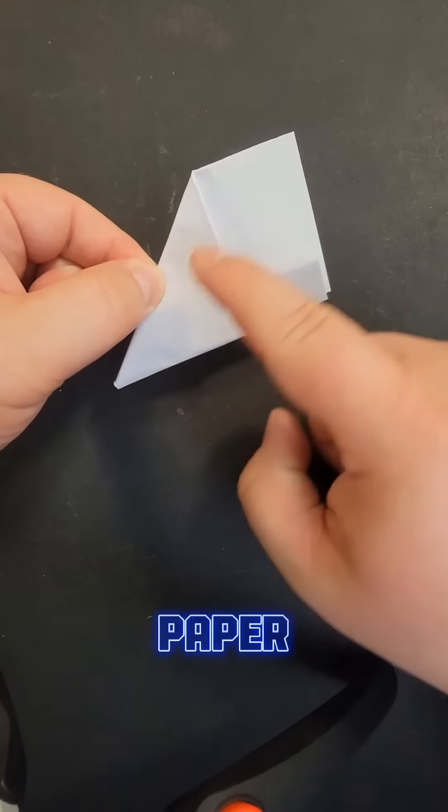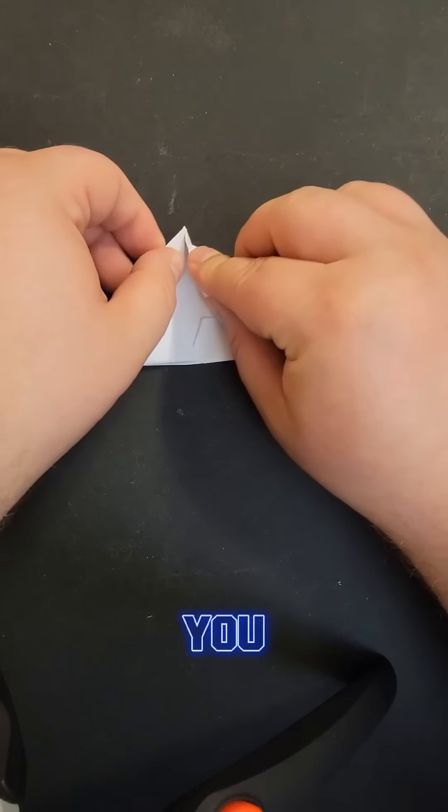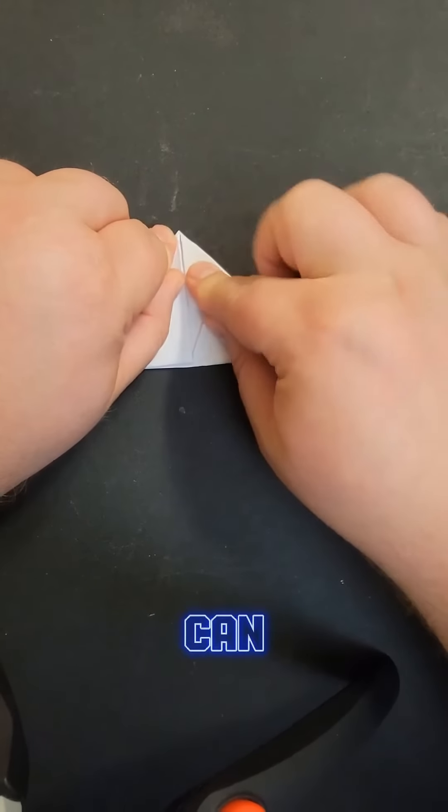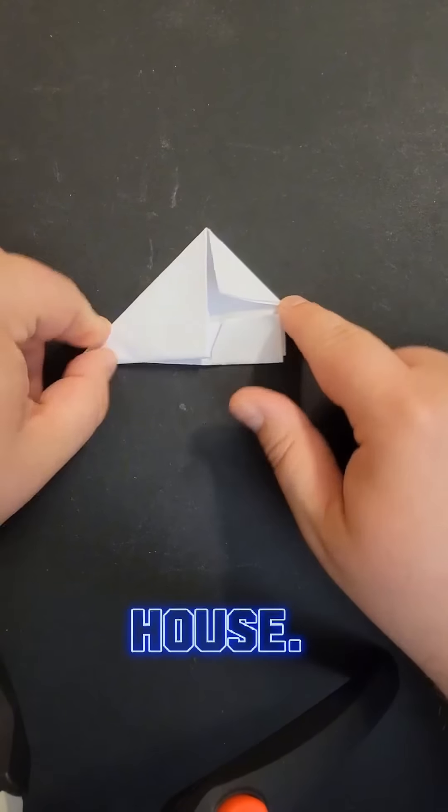Find the long edge of your paper football and then the corresponding corner. Fold this corner down just like you did with the triangles before. As you can see this should make a mini triangle. At this stage in the process it kind of looks like a mini house.